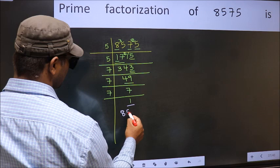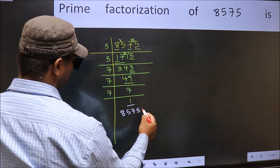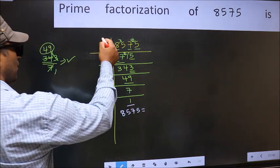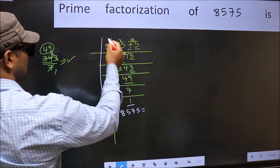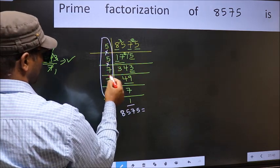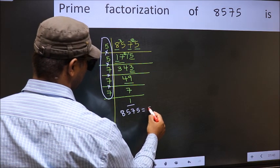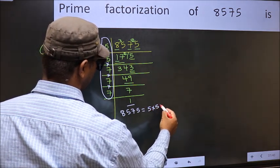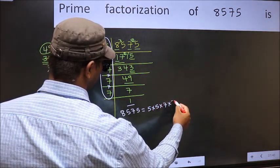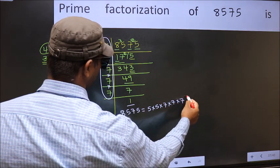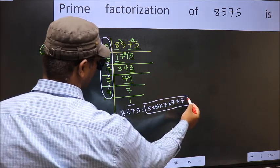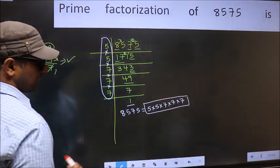So the prime factorization of 8575 is the product of these numbers. That is, 5 into 5 into 5 into 7 into 7. This is the prime factorization of 8575.